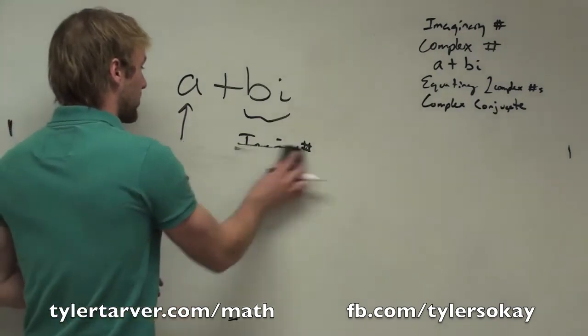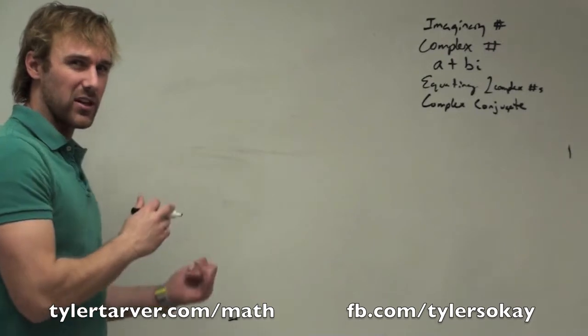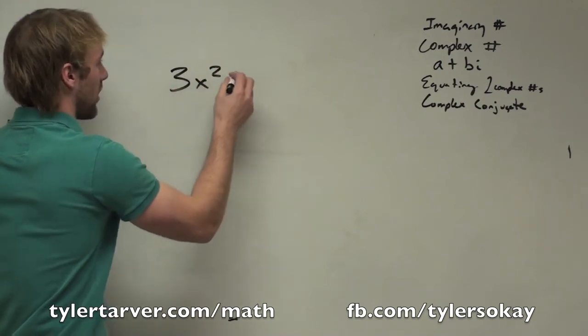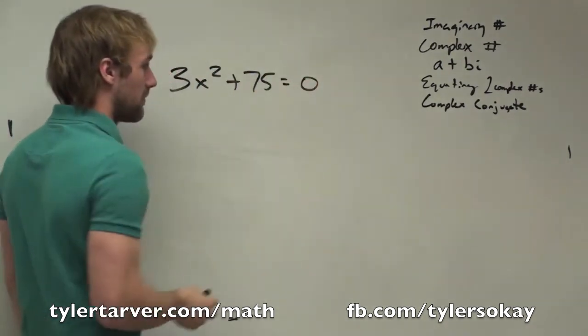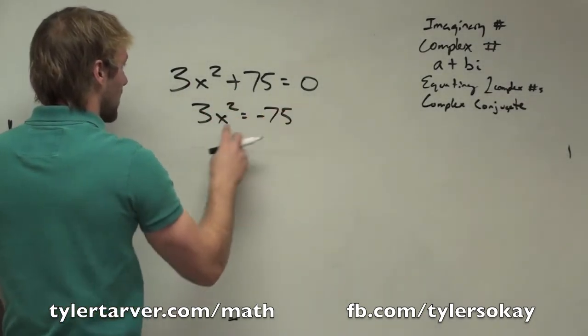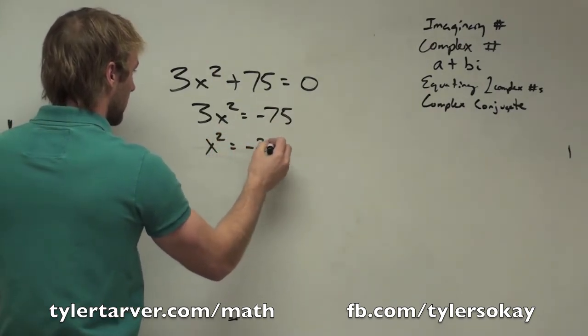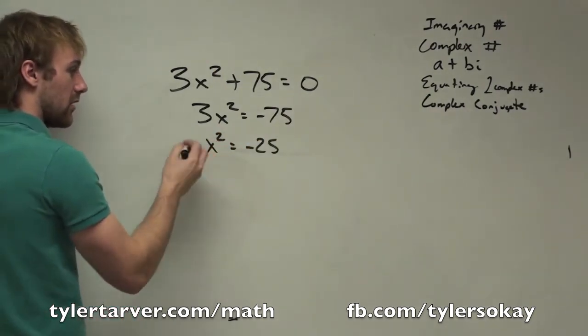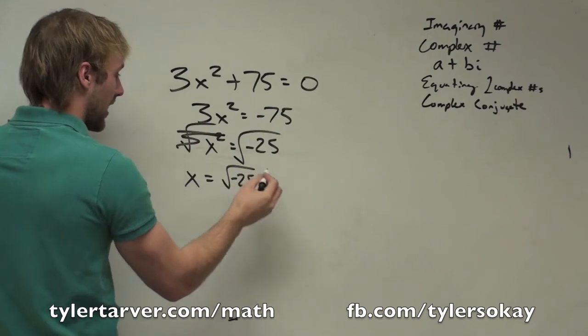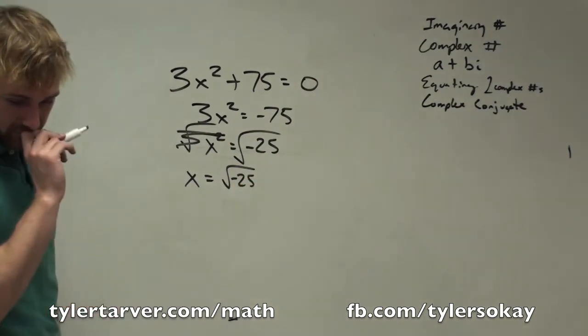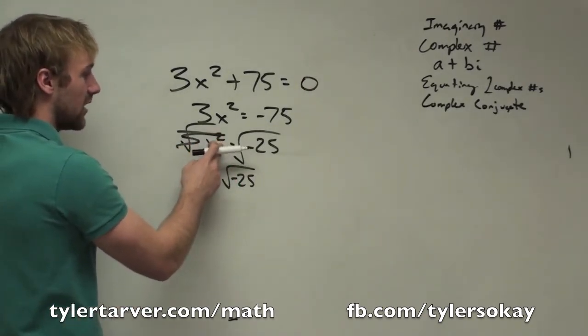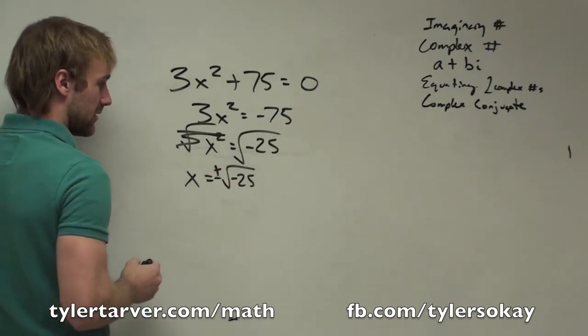I hate to backtrack, but I want to do one example kind of based off the imaginary, not complex, just imaginary. Let's say we have something like this. We've got 3x squared plus 75 equals 0, and we want to solve this. Subtract 75. We divide by 3, and then what do we do to get rid of the square? Square root, right? Now, last section we learned that if we do something where we're solving for x, we've got to put plus or minus in front of that.